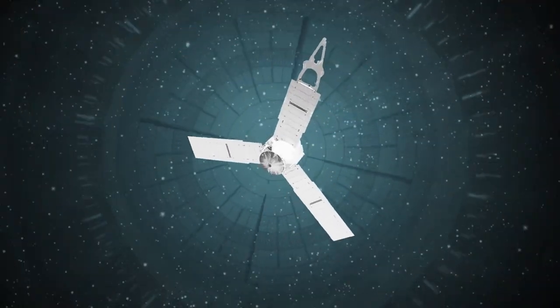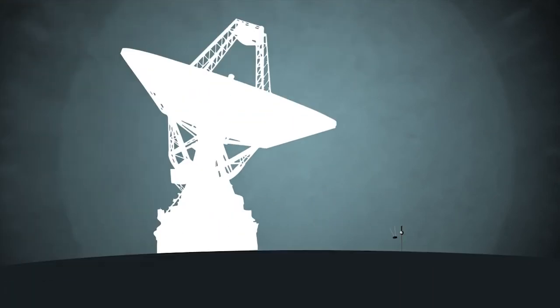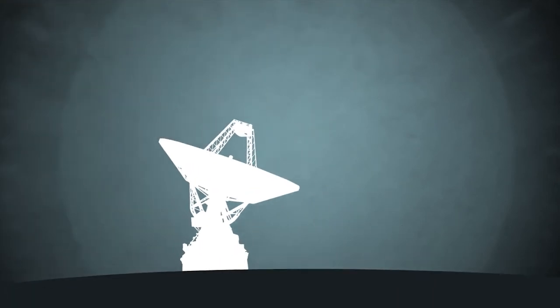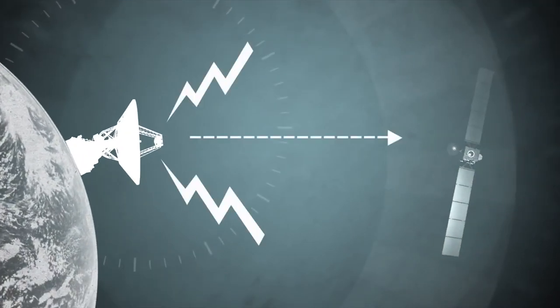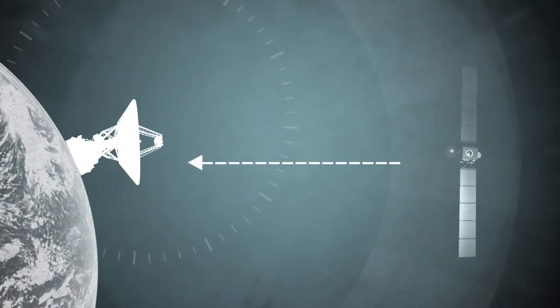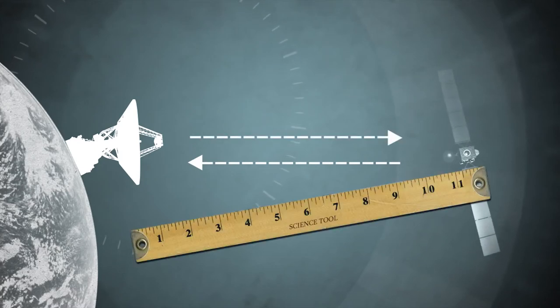Right now, scientists navigate spacecraft by using giant antennas here on Earth. No, not those kind. These kind. Just like the old sea explorers and our GPS, these antennas send out a signal that is bounced off the spacecraft straight back to the Earth. Scientists then measure the time it took for this round trip, and that's what determines the spacecraft's distance and speed.